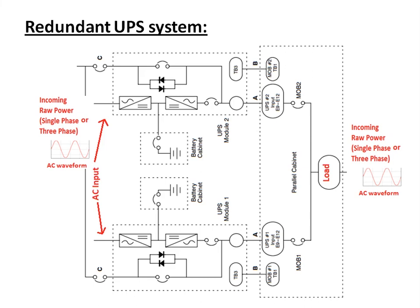Redundant UPS systems: in cases where a single point of failure is not acceptable and higher reliability of backup power is required, a single UPS will not meet the requirement. In that case, a redundant system — meaning two parallel UPS systems — are connected to the load, each with separate battery banks. In normal conditions, both UPS systems supply the load. If one UPS fails, the other UPS supplies the total power to the load, eliminating a single point of failure.